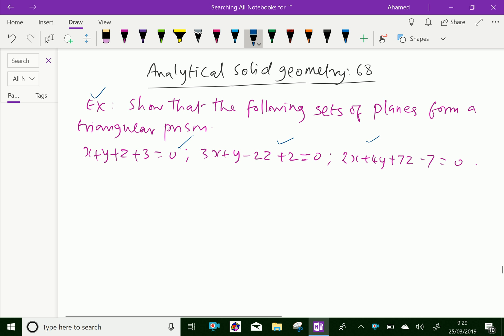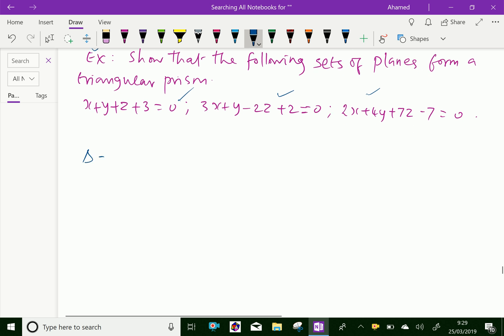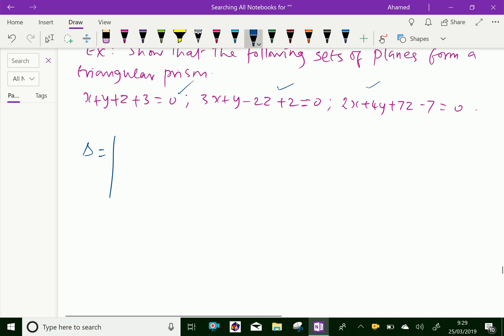First, let us calculate delta, which is the determinant value of the coefficients of x, y, z only in all planes. That is 1, 1, 1; 3, 1, -2; 2, 4, 7.